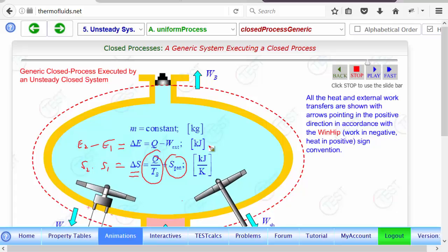Notice that in an open steady system, all the units were on the basis of per second, but here we integrated over time, so there is no kilowatt. Instead of that, the energy unit is kilojoule.